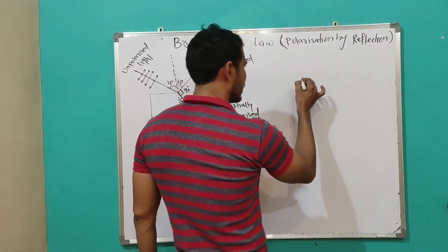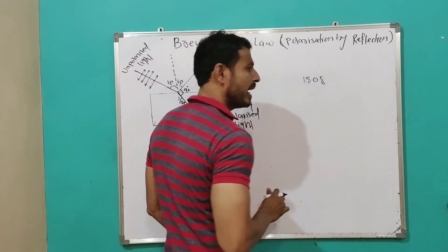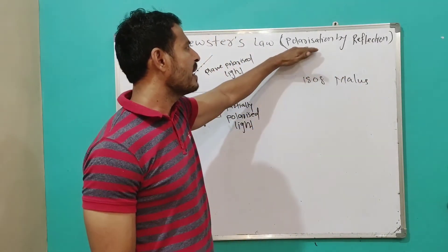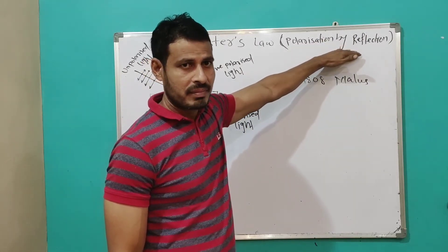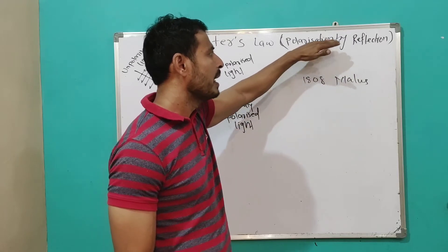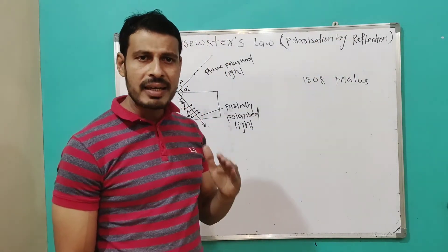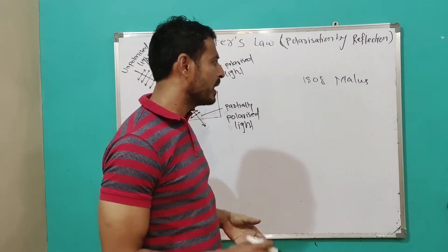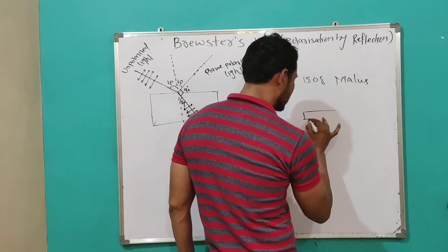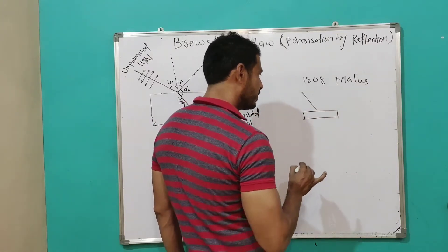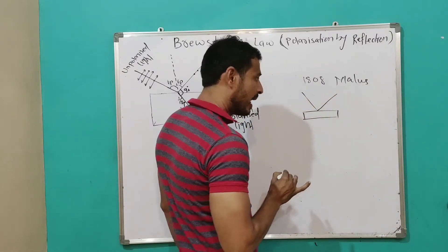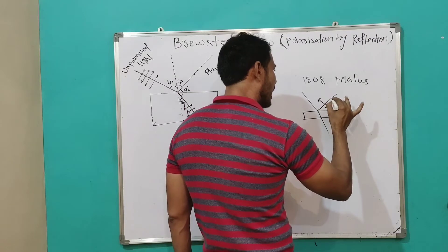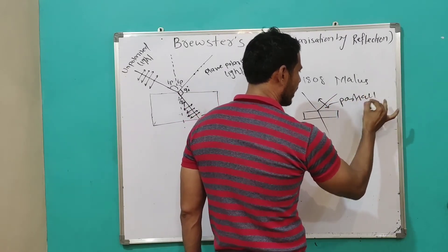Malus in 1808 discovered the phenomena of polarization by reflection. He discovered that when the beam of monochromatic light is incident on a glass plane, then some part of this light gets reflected and the remaining part gets transmitted. This reflected light becomes a partially polarized light.